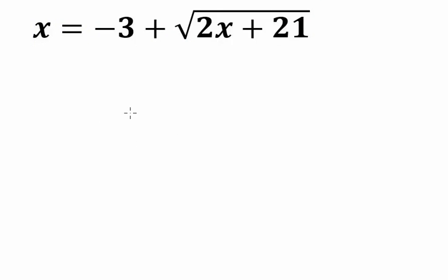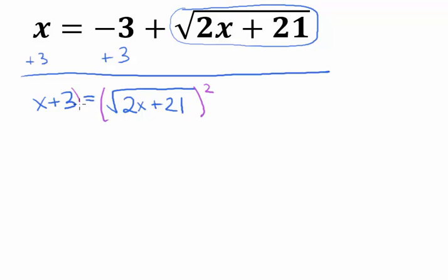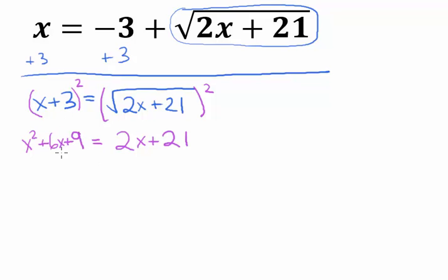Our goal should be to get the entire square root alone, and then square both sides. We can do that fairly easily — let's add 3 to both sides. So now we have x plus 3 equals the square root of (2x plus 21). Now I'm in business — if I square both sides, that'll get rid of the square root once and for all. The right side just becomes 2x plus 21. On the left side, I need to expand the binomial: (x plus 3) squared equals x squared plus 6x plus 9 — a perfect square trinomial.